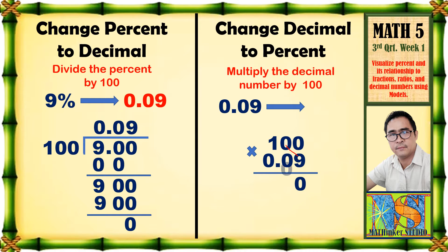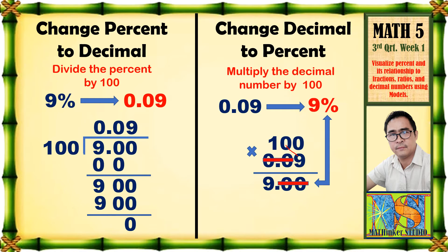Zero times 9 is zero. Then, 1 times 9 is equal to 9. Kung napapansin ninyo, mayroon dalawang zero bago yung 9 — pwede na natin yan tanggalin. Ilagay natin ang decimal point sa ating sagot, dalawang hakbang mula sa kanan, dahil mayroon lang tayong dalawang digit after the decimal point. Ang natitira ngayon ay 9 percent — yung dalawang zero ay pinalitan ng percent sign. Kung titingnan ninyo, pareho lang sila sa unang sinagutan natin.